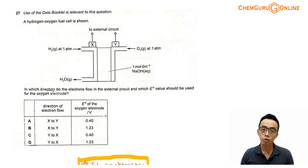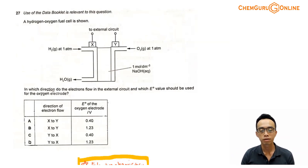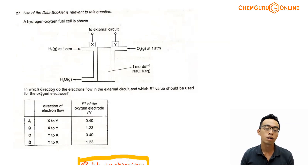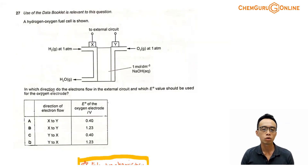Hi everyone, this is Maverick Puan, the chemistry guru. In this video, we want to discuss the suggested solution for 2020 A-levels H2 chemistry paper 1 question 27.